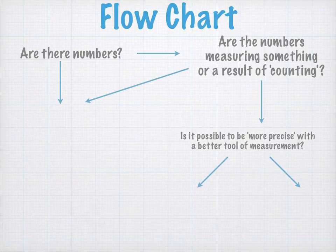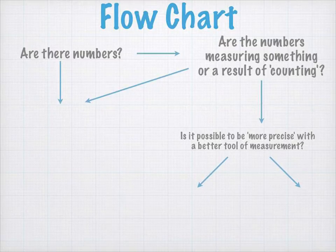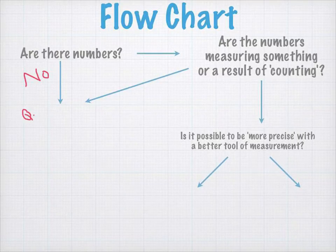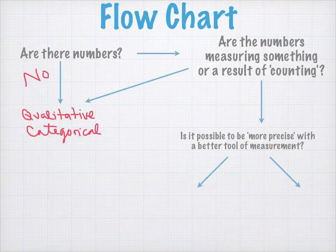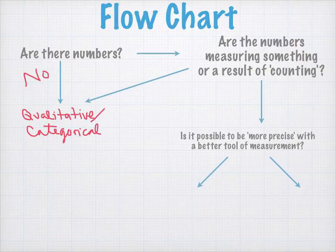On this page, we're going to use a flowchart to help us determine whether we are dealing with qualitative or categorical data, or quantitative or numerical data. The first question we need to ask ourselves is: are there numbers? If the answer is no, you're going to be working with qualitative data, which we also know to be categorical. For example, if we are talking about someone's favorite color — blue, red, orange — these aren't numbers, so it's automatically going to be qualitative or categorical.